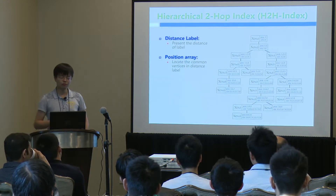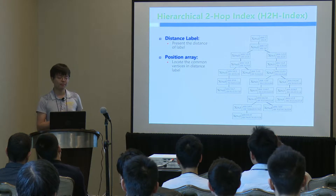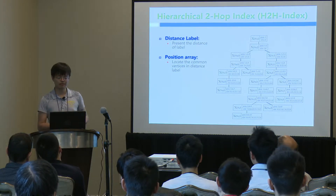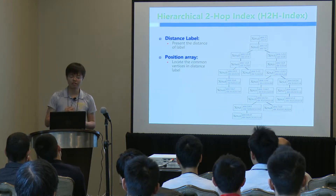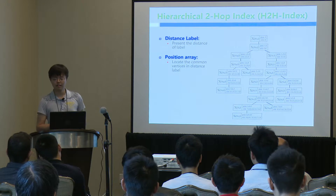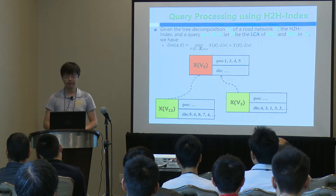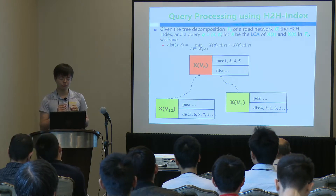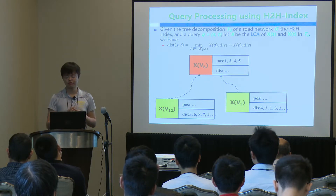In the H2H index, we create two labels. The first label stores distances, similar to two-hop labeling. The second label is a position array that helps us locate the common vertex. For a query, we select the distance label from the tree decomposition and choose the position array at the LCA of the two query vertices.